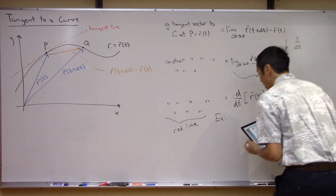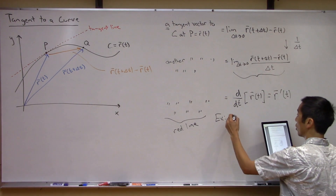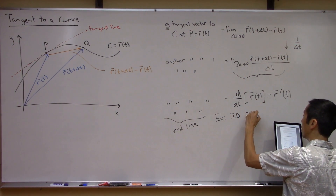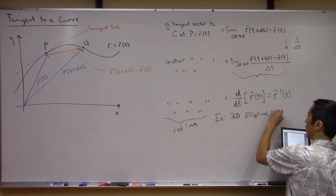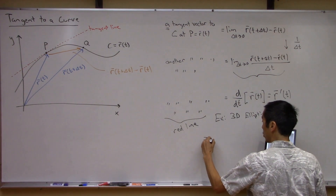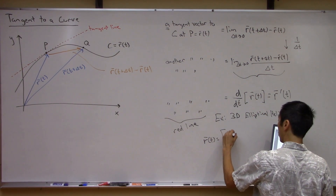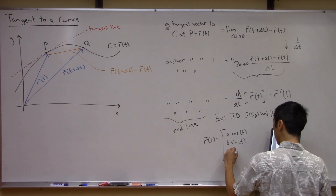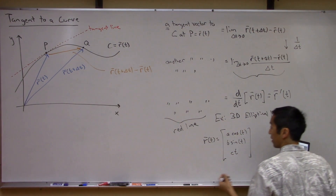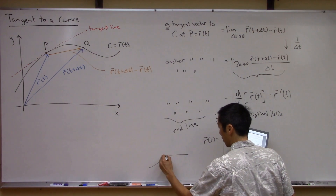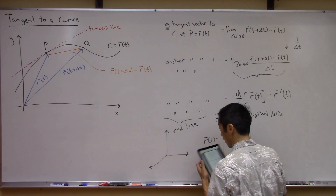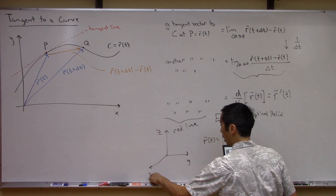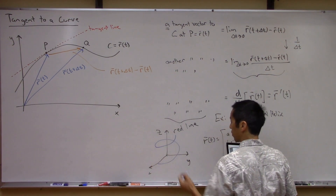Let's look at a quick example using the same one from our discussion on parametric equations — the 3D elliptical helix. We said the parameterization R of T looks like A cosine of T, B sine of T, and then the Z value was C times T. What this gave you in three-dimensional space is this sort of upward spiraling helix.